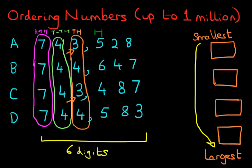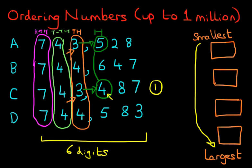We're going to look at the hundreds, but we'll do this individually. We're going to start with A and C — the two numbers which have got three in the thousands. So let's put a circle around the hundreds digits. We are now comparing the five and the four — the hundreds. Which one is smaller? Well, that's simple — it is four. So C immediately becomes our smallest number. The five becomes our next smallest number, so that is A in second place.